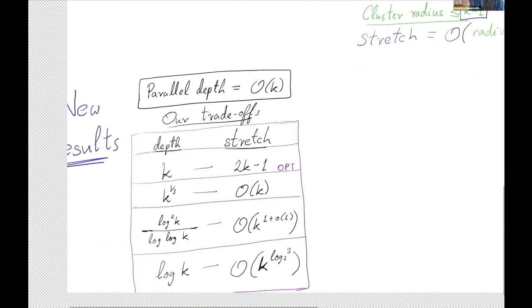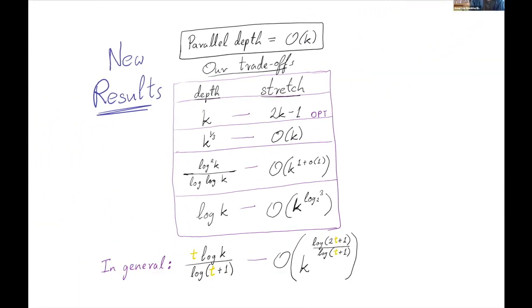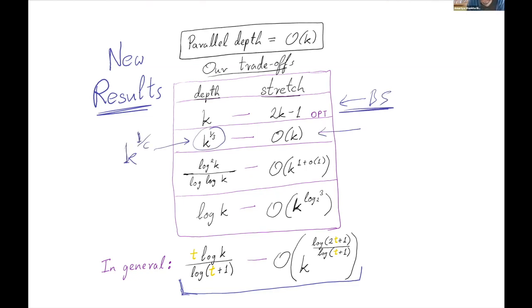Now we'll move on to our new results in comparison to Baswana-Sen. Baswana-Sen takes O(k) parallel depth because every iteration depends on the previous one. On the other hand, we get somewhat worse stretch bounds but much faster parallel runtimes. We can get O(k) stretch using k^(1/3), or really k to the 1 over any constant, number of rounds. We can also get k to the 1 plus little-o(1) stretch using polylogarithmically many rounds. If we restrict to only log k rounds, we get a stretch of k to the log 3. Since k is less than log n, this is log log n rounds.